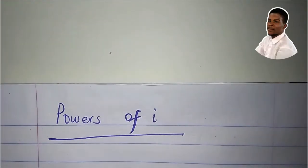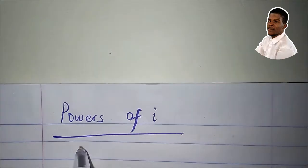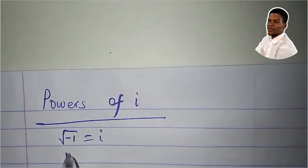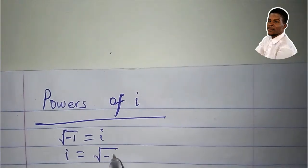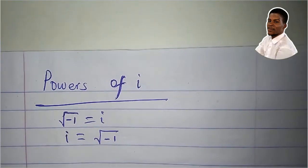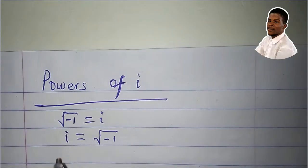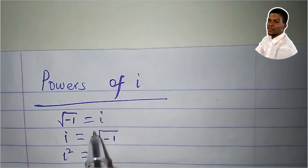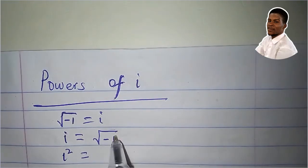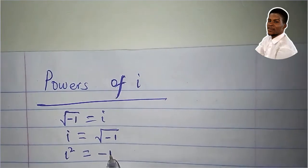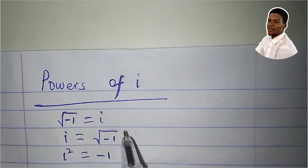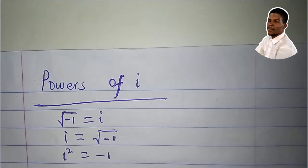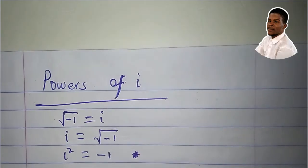We've seen that the square root of minus 1 is equal to i, that is, i equals the square root of negative 1. If we square both sides, i squared will equal the square of the square root of negative 1 — the square takes away the square root — leaving us with negative 1. So i squared is equal to minus 1. This must be noted.